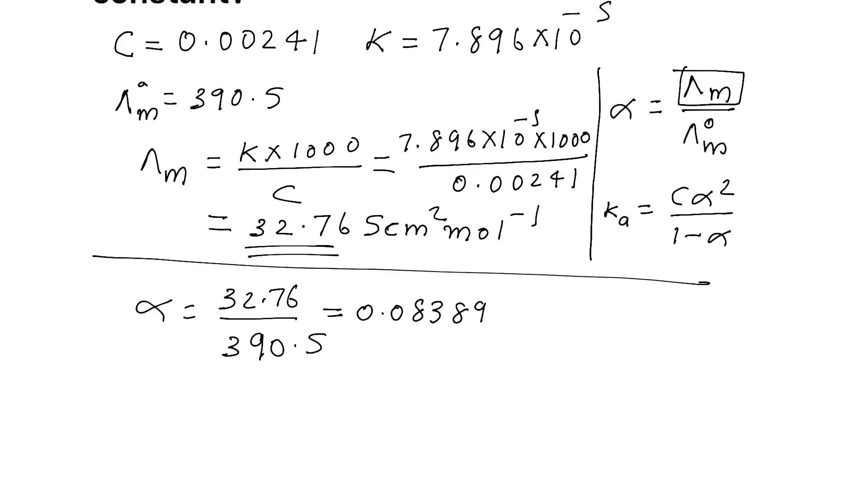Now, we got alpha. So, directly, we can find dissociation constant. What is that? Ka is equal to C. What is C? 0.00241 into alpha is what? 0.08389 square. Or, you can use 0.084. That is fine. You can use like that. Otherwise, you take a lot of time for the calculation.